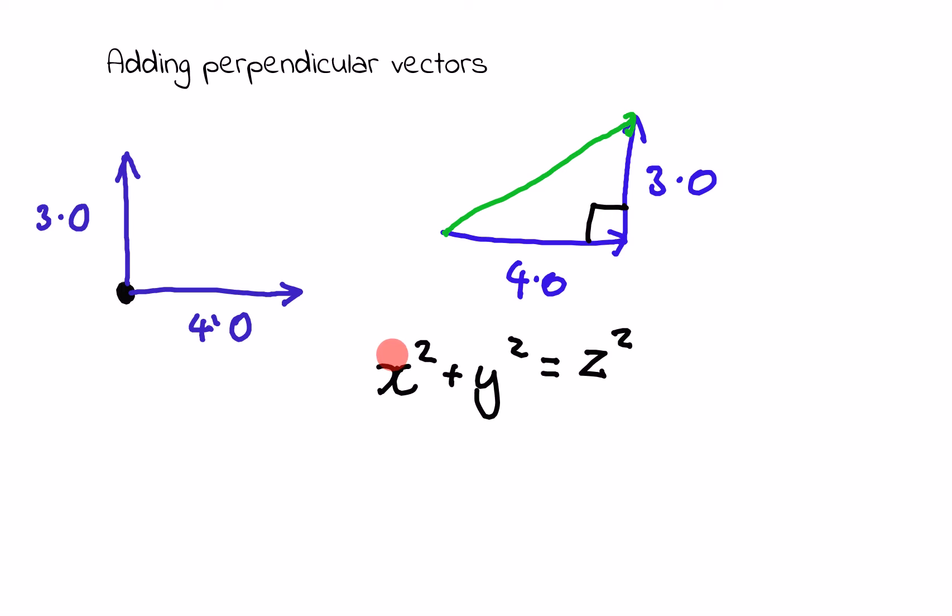In this case we would have 4 squared plus 3 squared, and that will equal 16 plus 9, which equals 25. And of course this 25 is the square of the hypotenuse, so I need to take square root of 25, and that equals 5, whatever the unit is for this particular vector we're dealing with.